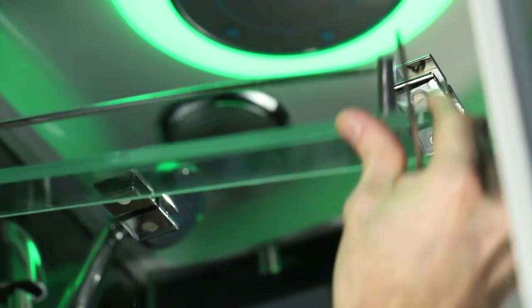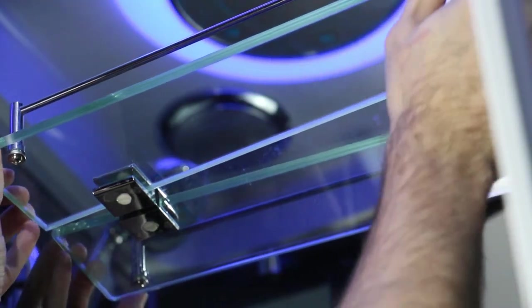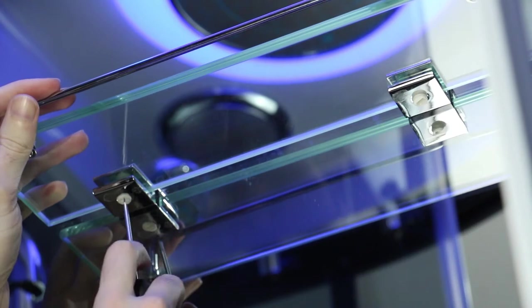Now with both brackets fitted, slide the glass shelf into the brackets and tighten the white grub screw using a flat headed screwdriver.